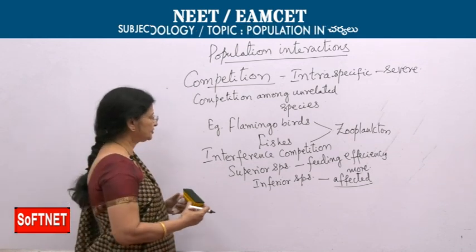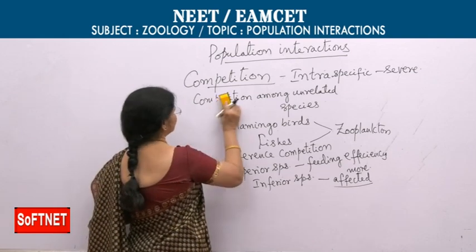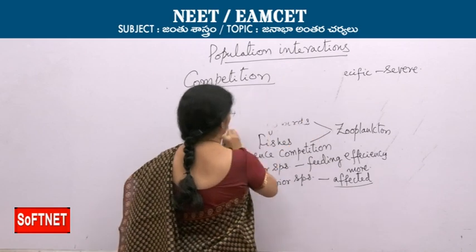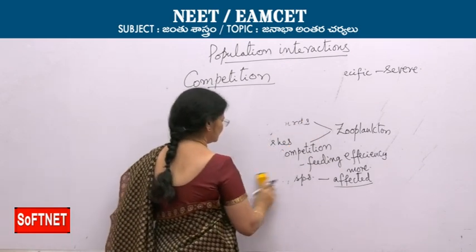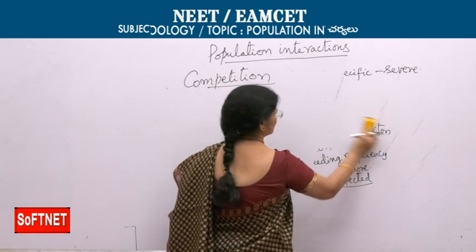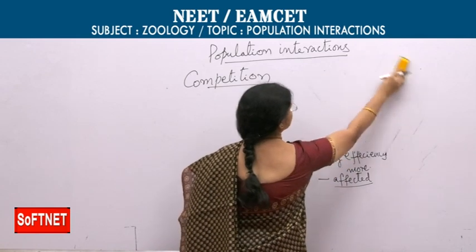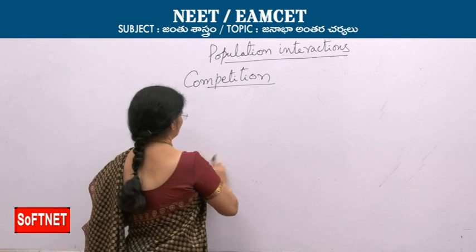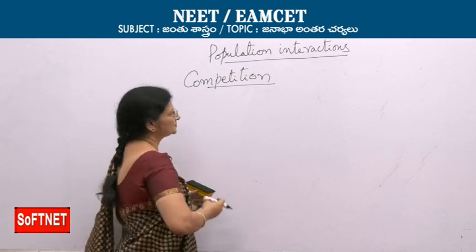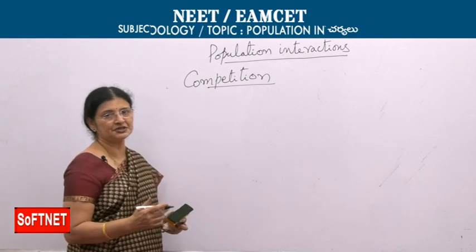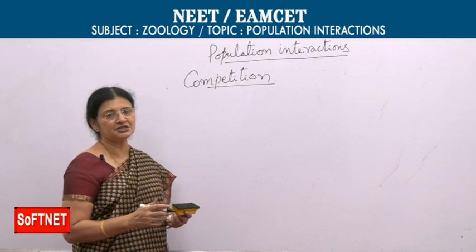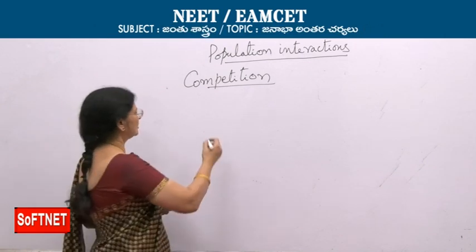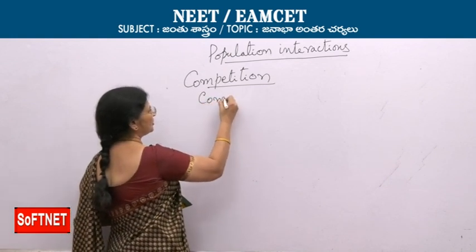When there is limitation in environmental resources, it can lead to the total extinction of one species. The inferior species is completely eliminated by the superior species. This is called competitive exclusion.